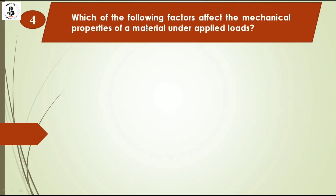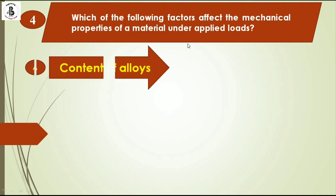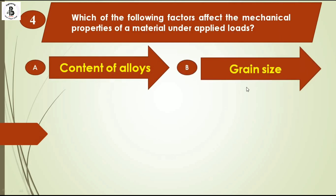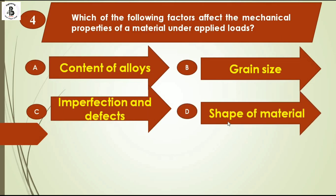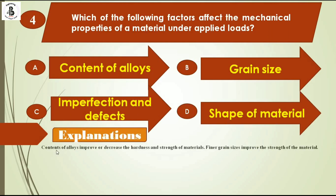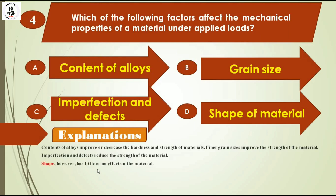Which of the following factors affect the mechanical properties of the material under applied loads? Option A content of alloys, option B grain size, option C imperfections and defects, option D shape of the materials. Content of alloys improves or decreases the hardness and strength. Fine grain size improves the strength. Imperfections and defects reduce the strength. Shape, however, has little or no effect on the material. So the right answer is option D, shape of the material.